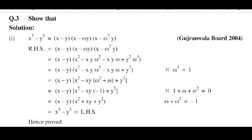Next, x square, take common, middle two terms, that is common, that is xy minus xy into omega square plus omega plus y square.